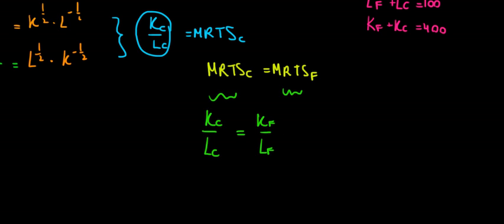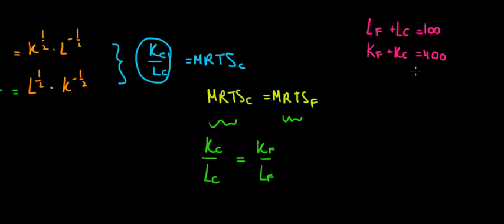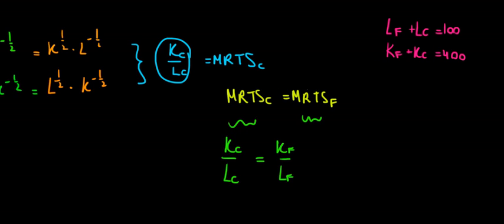With this in mind, we can go one step further. We can write the relationship between capital of food and capital of clothing, because we have it as an equation from the resource constraints. So let's write the relationship between K_F, K_C, L_F, and L_C.